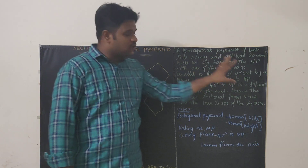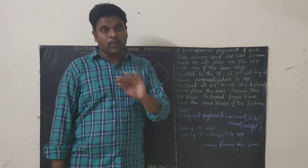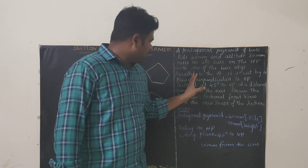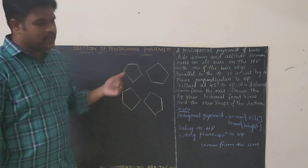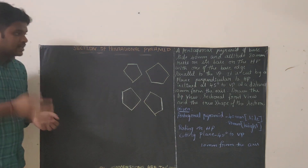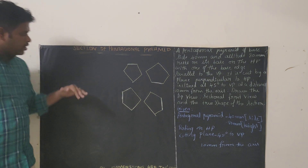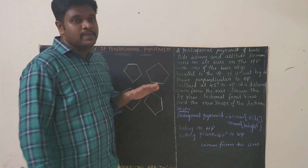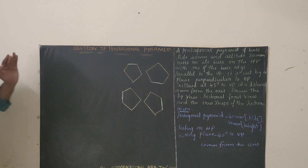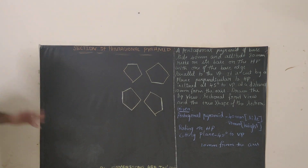It rests on its base on HP, so resting will be on HP, with one of the base edges parallel to VP. It is cut by a plane perpendicular to HP and inclined at 45 degrees to VP. The cutting plane is inclined 45 degrees to VP, meaning the cutting plane will be in the VP. This is a special type of problem different from the usual ones, and the cutting plane is at a distance of 10 mm away from the axis.